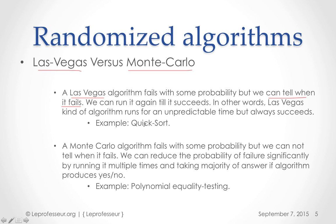Monte Carlo algorithm also fails with some probability, but you cannot tell when it fails. However, you can reduce the failure probability to a very significantly low number. If your algorithm produces yes and no kind of answer, you just take the majority of those answers. For example, polynomial equality testing.